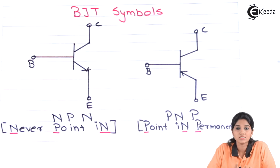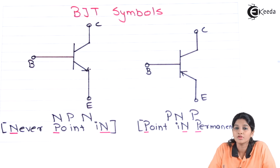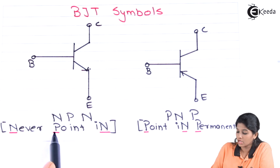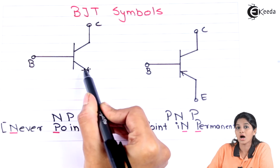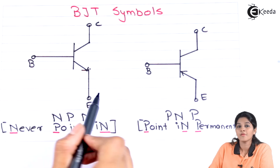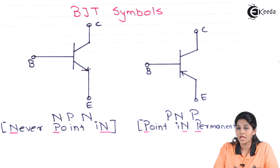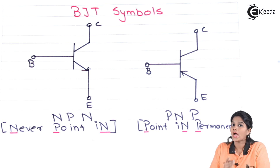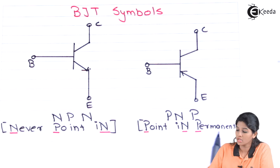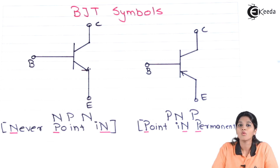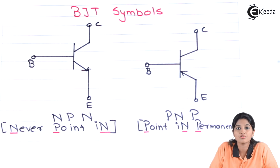Now let's move towards the symbol of BJT. The NPN and PNP transistors are exactly opposite to each other, or we can say NPN is the complement of PNP. So the symbol differs with the direction of the arrowhead. NPN can indicate 'never points in', meaning the arrowhead always points in the outward direction at the emitter terminal. The arrowhead on the BJT symbol indicates the direction of conventional current flow. In NPN transistor, the direction of current flow is from base to emitter. Whereas in PNP, as its name indicates 'point in permanently', it always points towards the base, meaning the current flows from emitter to base. So symbolically also, PNP and NPN transistors are opposite to each other.